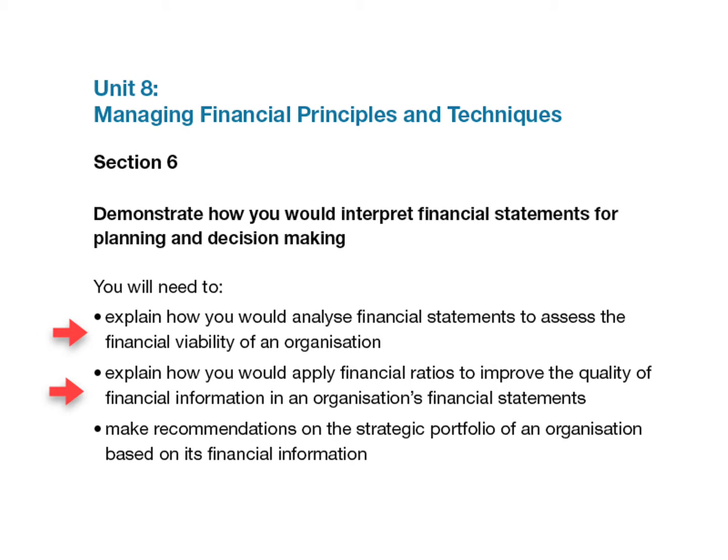You need to give specific examples of ratios, such as for profitability, liquidity, activity and long-term solvency, and then explain how these ratios enhance and illuminate the financial information that has been made available. On the last bullet point, you should focus on ideally your own organisation, or a typical organisation in your business sector, and discuss how an organisation should reshape its product or service's strategic portfolio, based on the current situation and visible trends apparent from its current financial information and financial and performance forecasts.